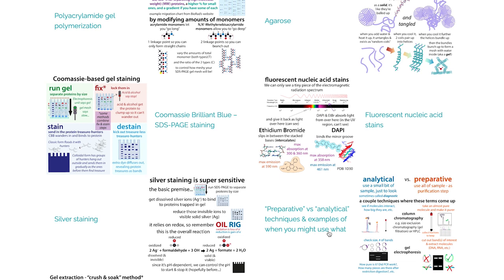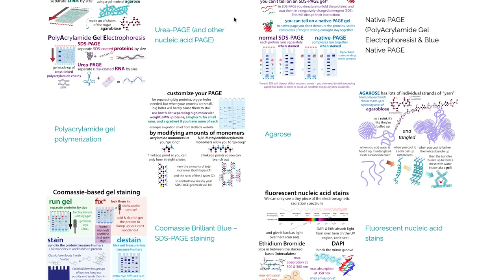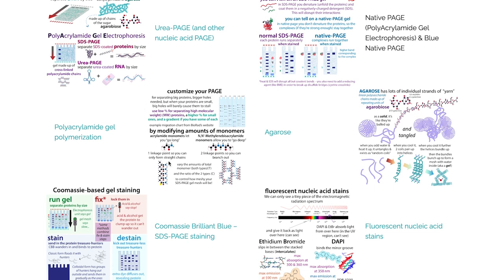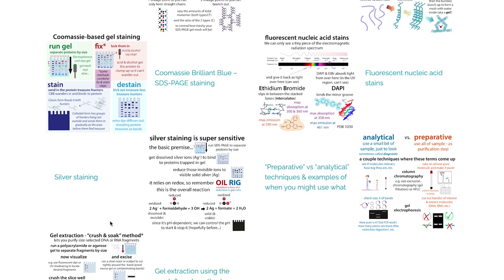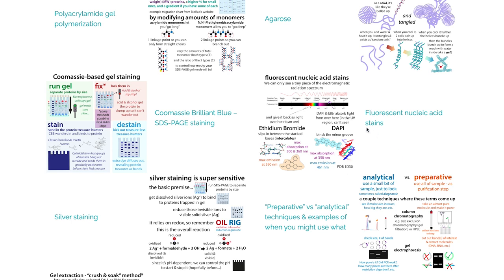When running a gel, you might do it for analytical purposes — just to see what's there — or for preparative purposes, where you actually use PAGE as a purification step. You can do gel extraction to cut out bands and isolate the DNA or RNA. If you just want to get a look at them, you commonly use a fluorescent nucleic acid stain — something like ethidium bromide or DAPI. There are also SYBR stains that you can use to stain your gel and see where the DNA or RNA is.